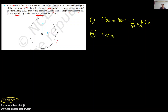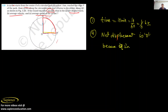Part (a): Net displacement. Net displacement is equal to how much? The initial and final position is the same — the cyclist travels from O and the final position is again O. So net displacement is zero, because the initial and final positions are the same.